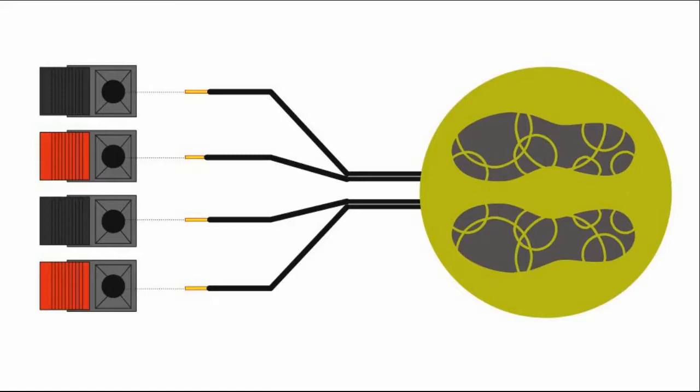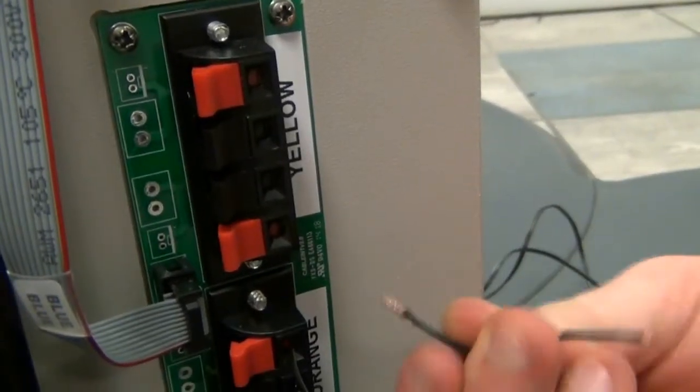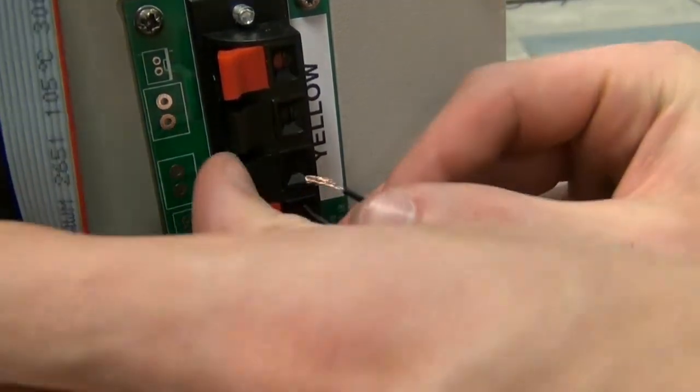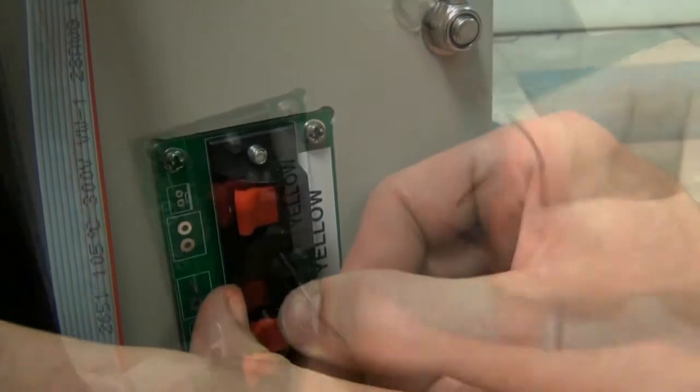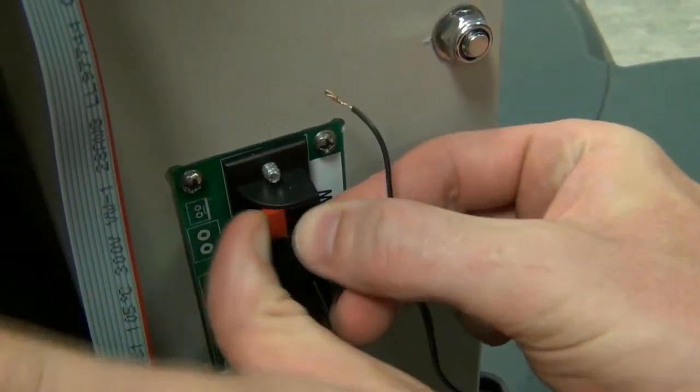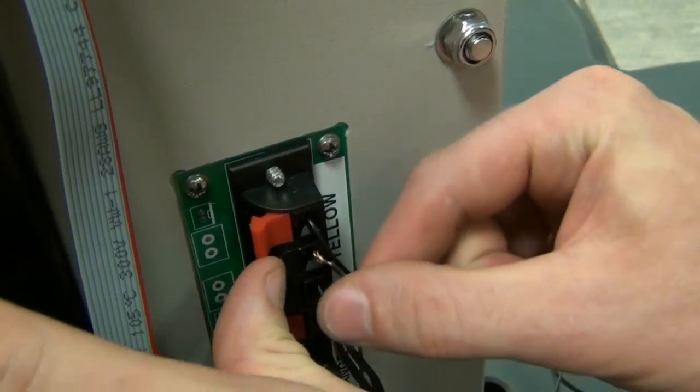On each pair of wires, one wire will connect to the red terminal block and the other will connect to the black. It does not matter which cable of the pair goes to which color, as long as you keep the cables in pairs and next to each other in the block connector, as shown in the image.